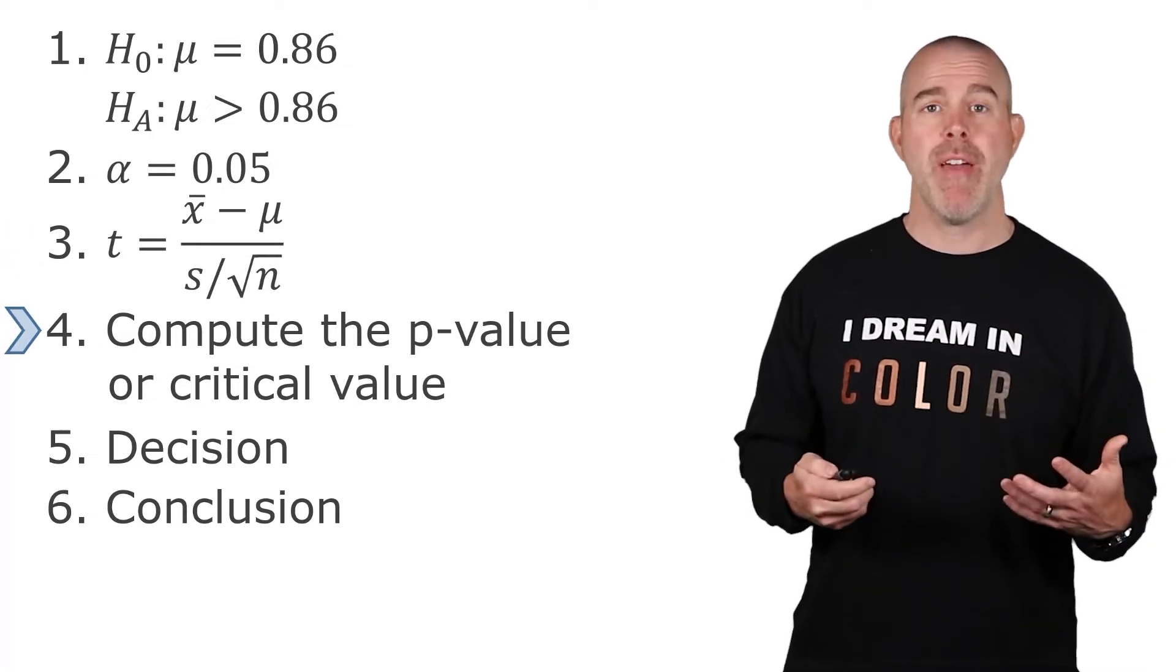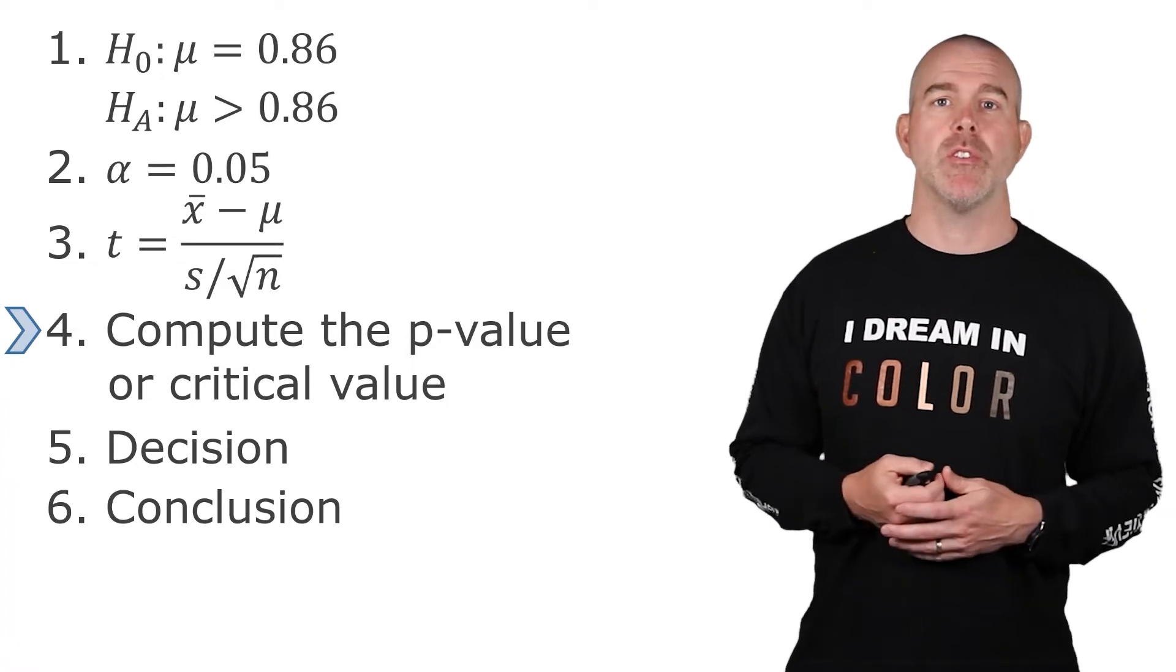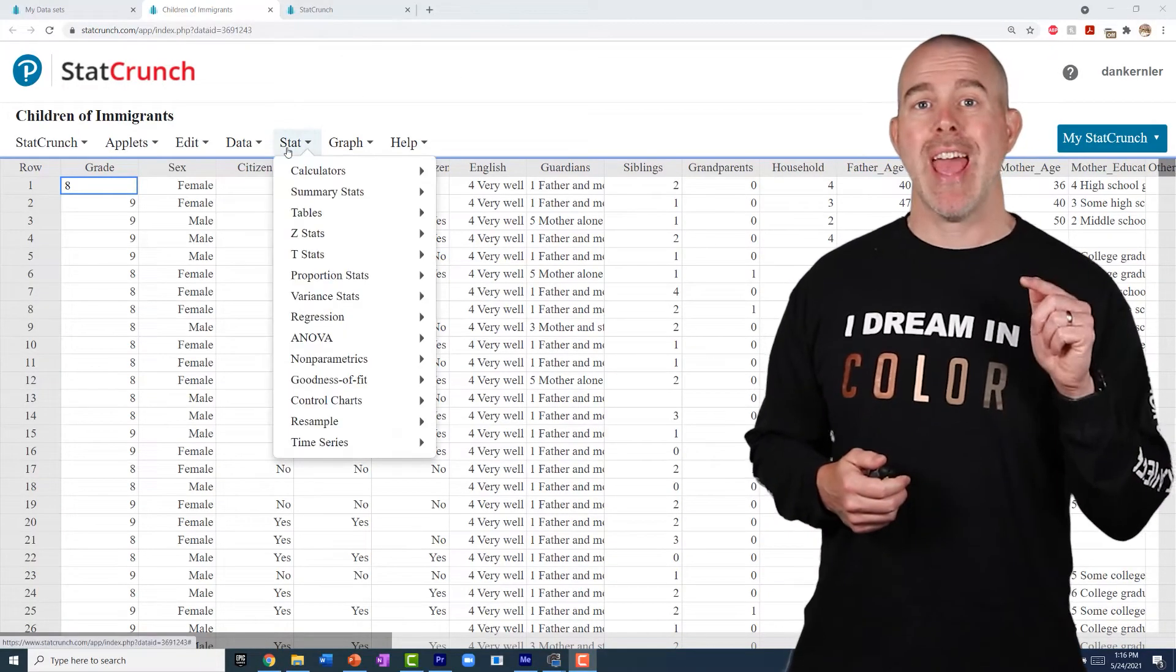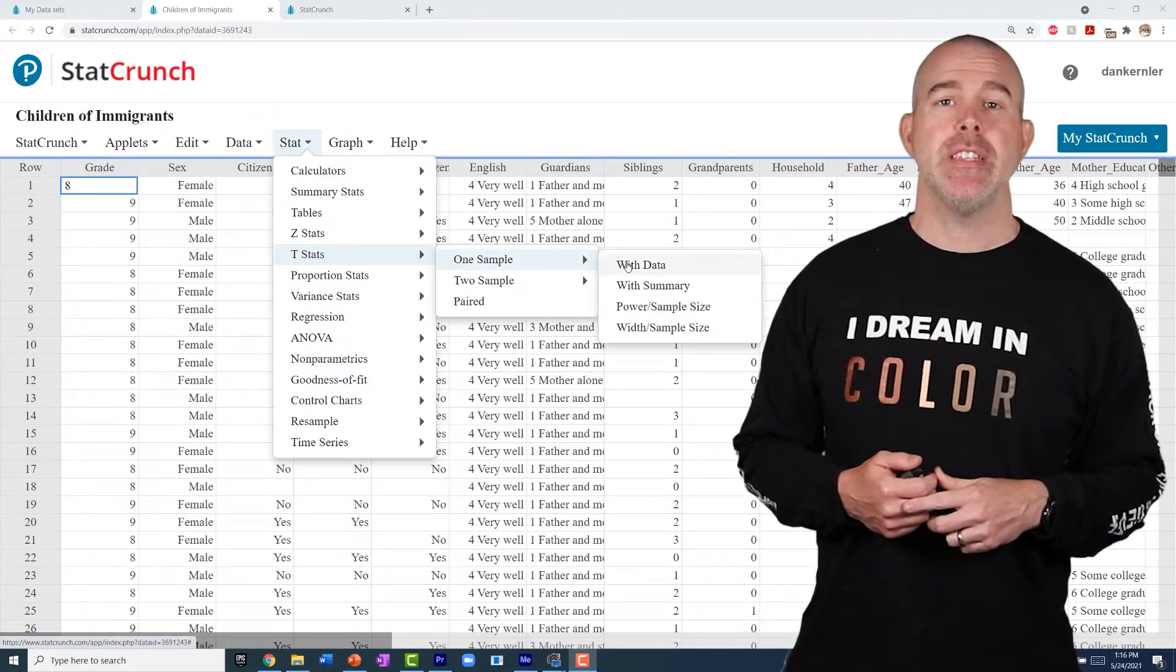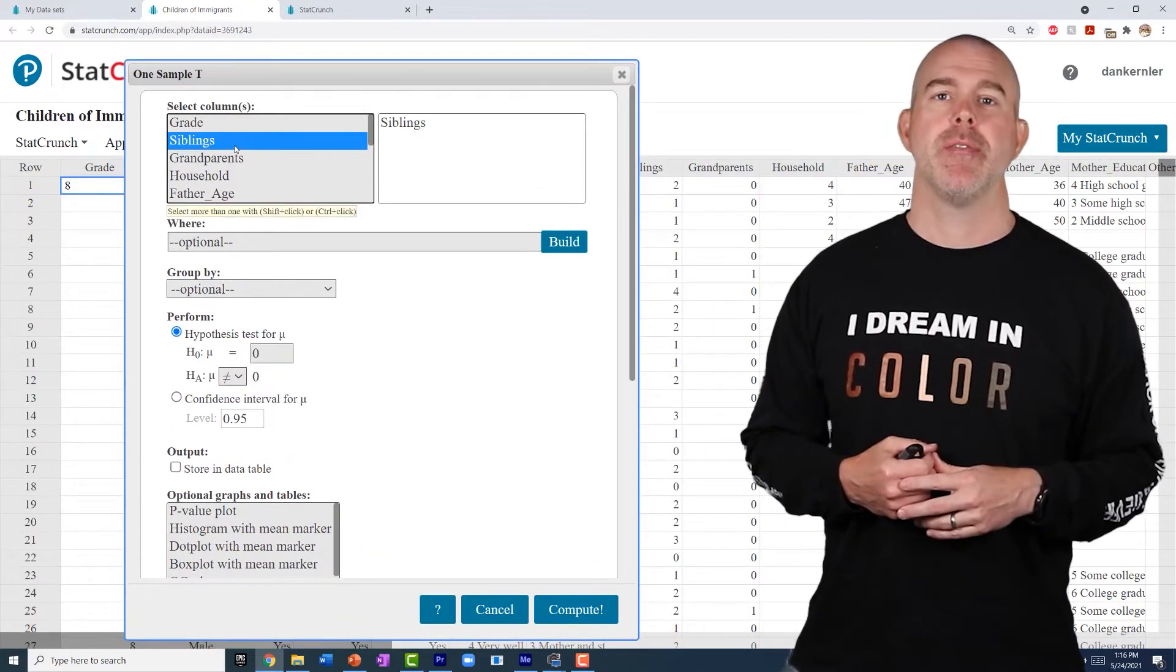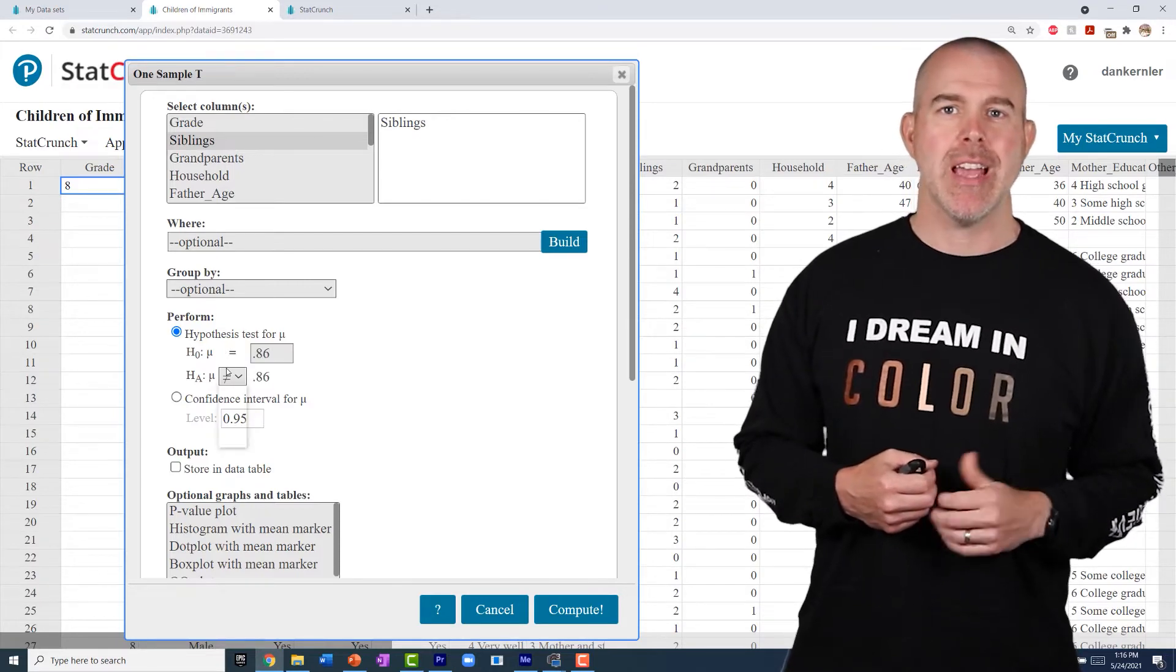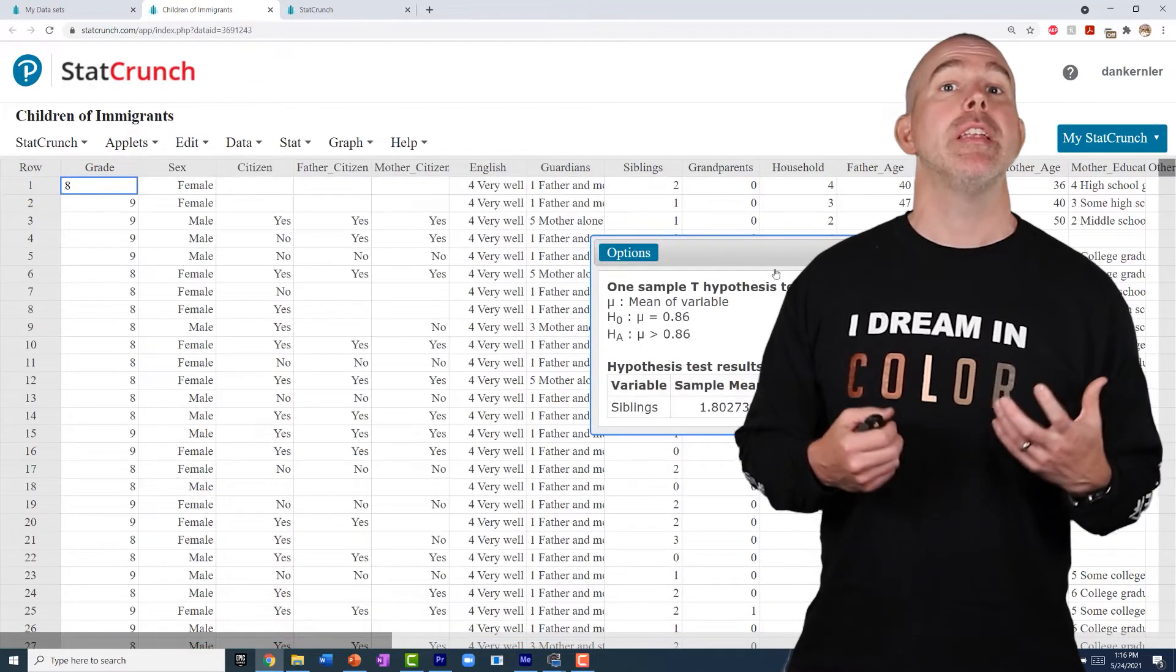And then to get the P value, we can compute that with a calculator, or we're going to use StatCrunch for that. Let's talk about how to do this test in StatCrunch. We're going to go stat. We want T stats. And then we'll do with data here. We're going to choose number of siblings. And we're going to do the mean. The null hypothesis was 0.86. And we want to do greater than. Remember, that was our alternative. And then we'll hit compute.